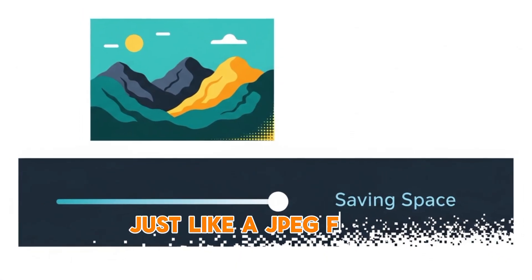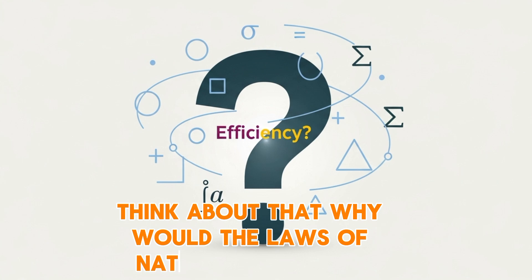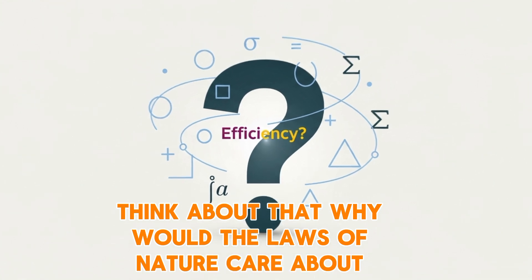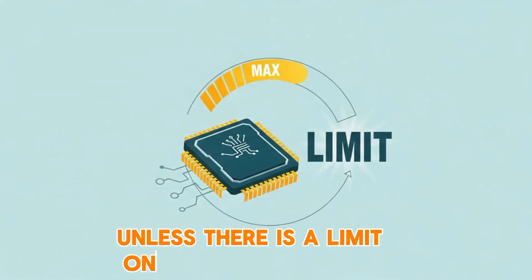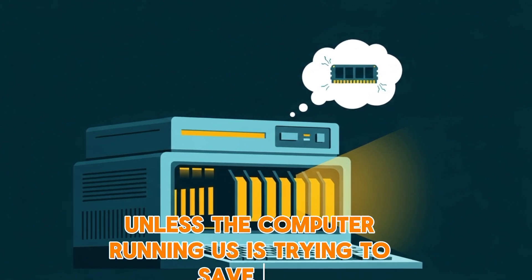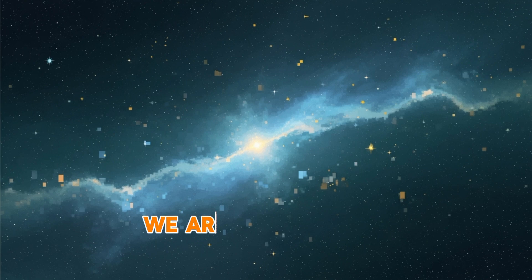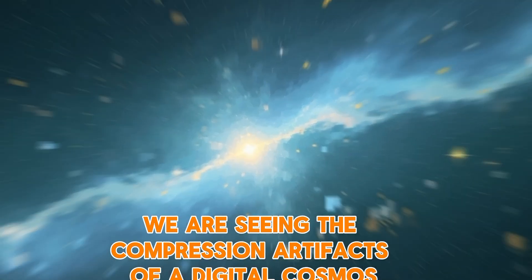Just like a JPEG file losing quality to save space. Think about that. Why would the laws of nature care about efficiency? Unless there is a limit on processing power. Unless the computer running us is trying to save RAM. We are seeing the pixels. We are seeing the compression artifacts of a digital cosmos.